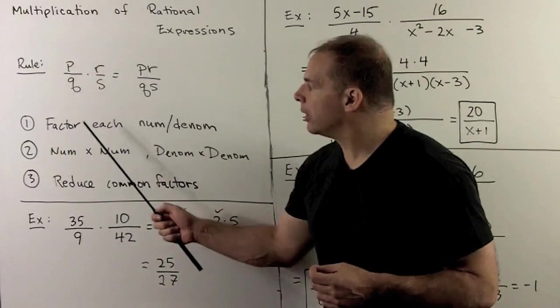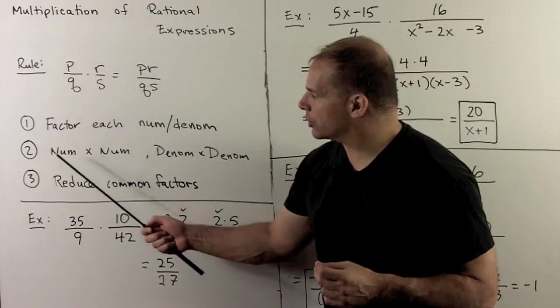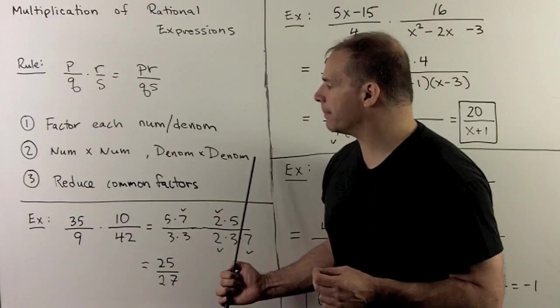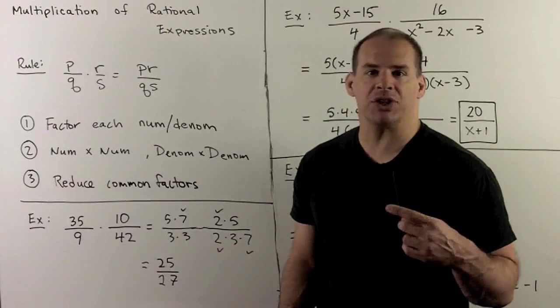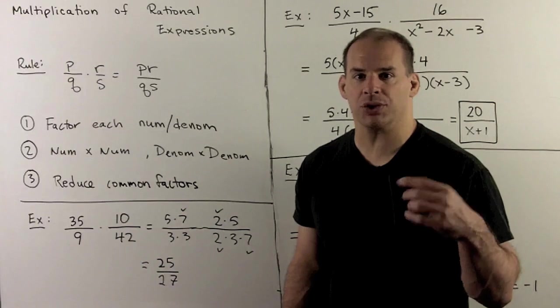First thing we do, we factor each numerator and denominator. Then we use our multiplication rule, numerator times numerator, denominator times denominator. And we finish by canceling out the common factors, taking care with those that cancel to a minus one.